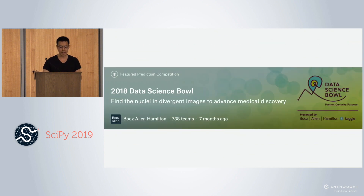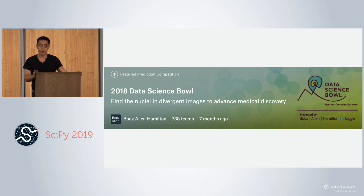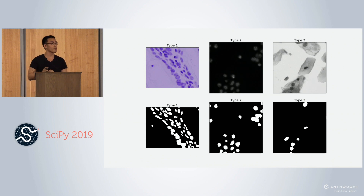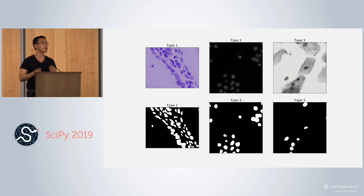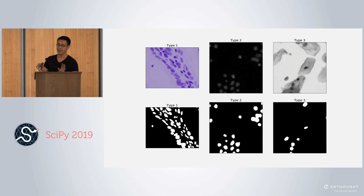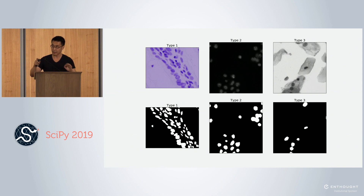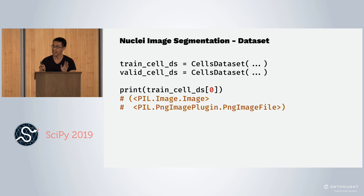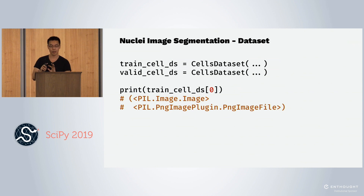The next problem is the 2018 Kaggle Data Science Bowl, which consists of images of cells where the problem was to predict the position of the nuclei. If you do unsupervised learning on the images, you see there are three different types — purple, black, and white — and the masks are just the nuclei. To use the Dataset API, you subclass the PyTorch dataset and create your own dataset class which outputs tuples of the cell image and its corresponding mask.